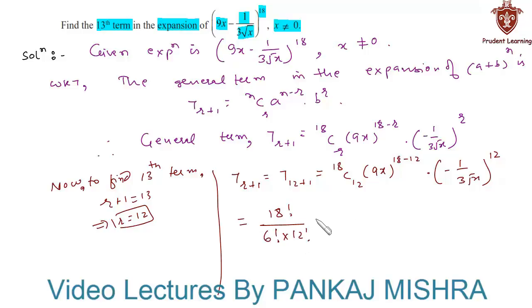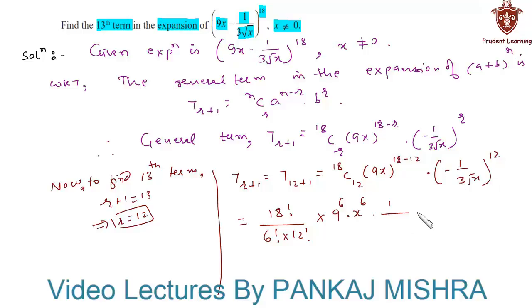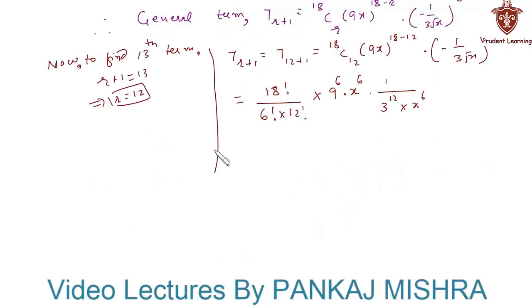Into (9x) whole raise to 6, which can also be written as 9 raise to 6 into x raise to 6. And this term (minus 1 upon 3 root x) raise to 12 can be written as 1 upon 3 raise to 12 into x raise to 6. Now let us try to simplify this as much as we can.